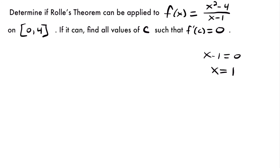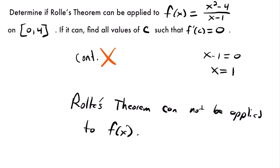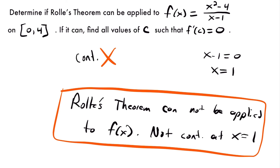Since x = 1 lies between 0 and 4, the function is not continuous on the entire interval. Continuity fails, so Rolle's theorem cannot be applied. We write that Rolle's theorem does not apply to f(x) because it is not continuous at x = 1.